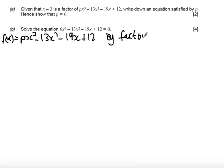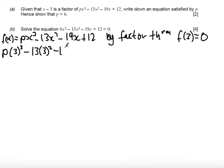then f of 3 must be equal to 0. So what we get is p times 3 cubed minus 13 times 3 squared minus 19 times 3 plus 12, this must be equal to 0.